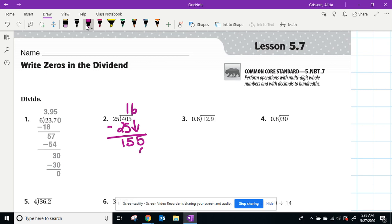Five times six is 30. Six times two is 12 plus three is 15. And again, we subtract and we get five. Well, we are unable to divide five by 25. It's not large enough. So we need to add a zero in the dividend.